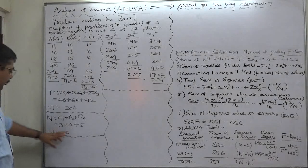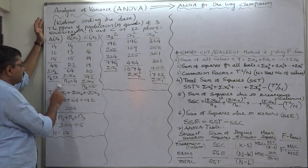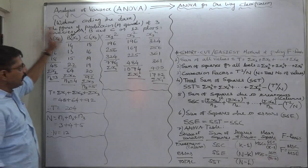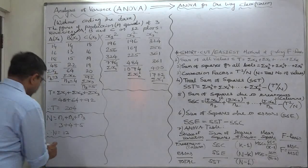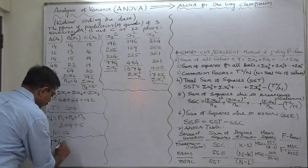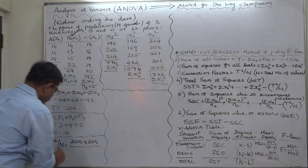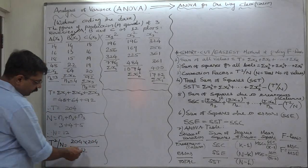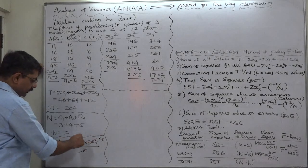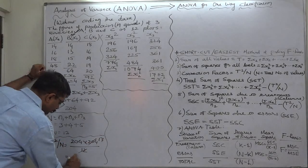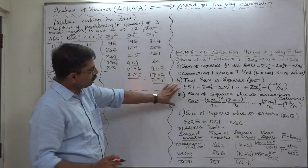Step three is calculating the correction factor, for which we need capital N. Capital N is 12 plots — the total number of units under analysis — found by adding 3 + 4 + 5 = 12. The correction factor is T squared divided by N: 204 squared divided by 12. Since 204 divided by 12 = 17, and 17 × 204 = 3468, the correction factor is 3468.